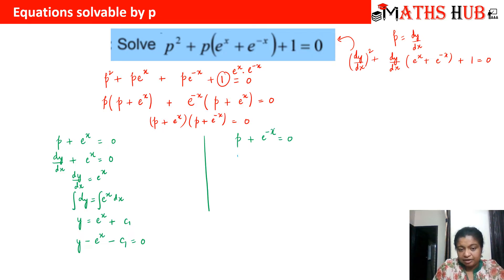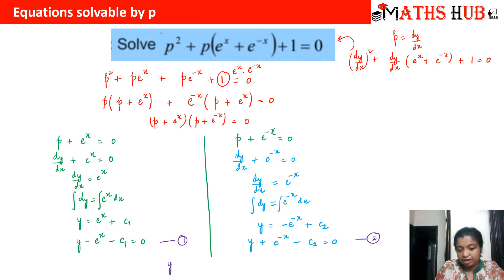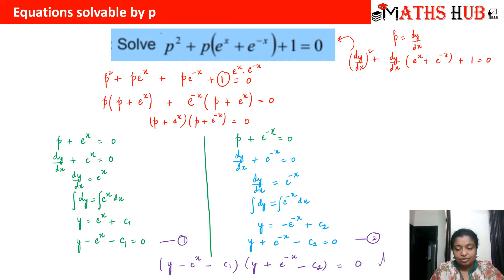Now let us take the second equation: dy/dx + e^(−x) = 0. Shifting e^(−x) gives dy/dx = −e^(−x), again variable separable. Integrating, we get y = e^(−x) + c₂, so y − e^(−x) − c₂ = 0. Combining both solutions, the final answer is: (y − e^x − c₁)(y + e^(−x) − c₂) = 0. This is the method of solvable by P.